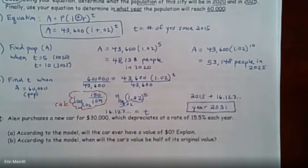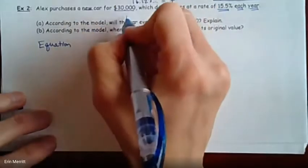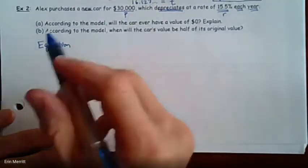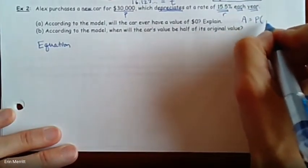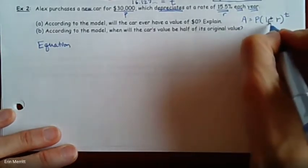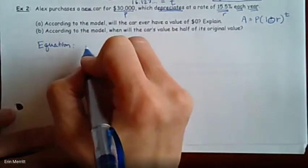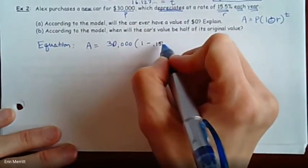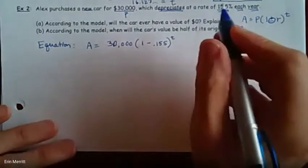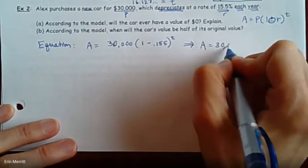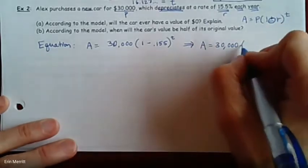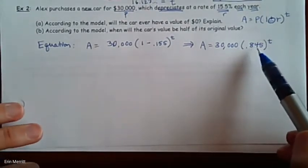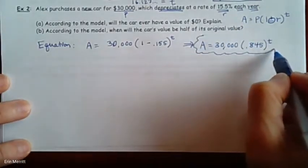The equation to model this, if I'm starting with 30,000 as the value, that's my P value. It depreciates at a rate of 15.5%. So I want to use this as my general formula, and we're going to go minus because it's depreciating. So A equals 30,000 times 1 minus 0.155 raised to the t power. I'm going to clean it up. So 30,000 times, one minus 0.155 comes out to be 0.845 raised to the t power. It should make sense that it's decreasing in value because that's a number less than one.